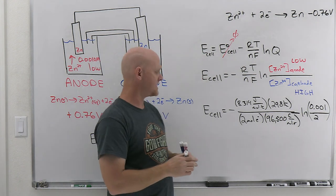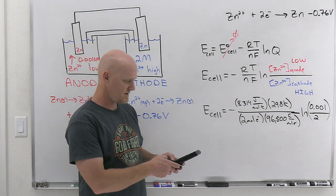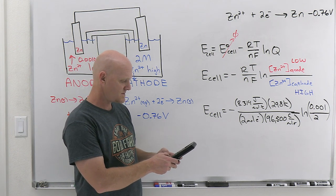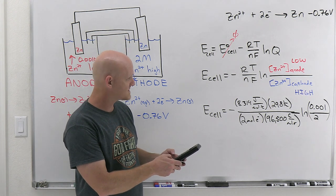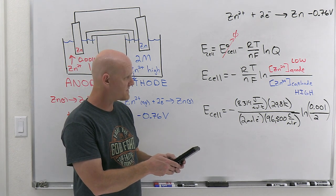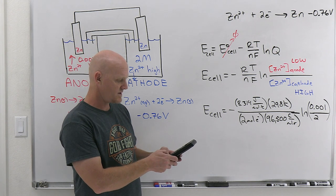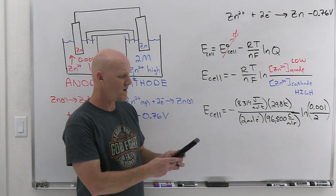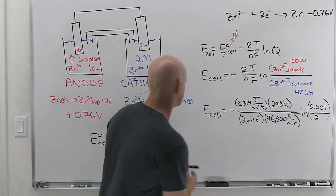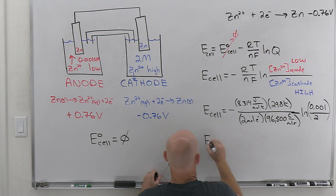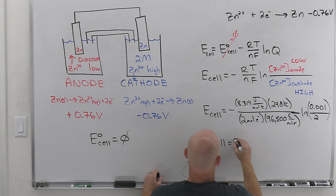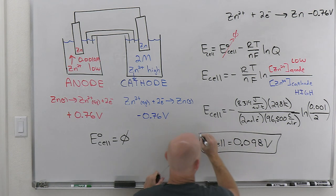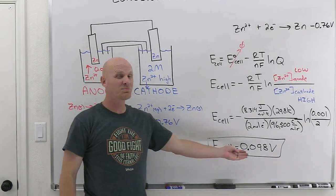And from here, it's going to be some plugging and chugging. Let's pull out that calculator. All right. So here we've got negative 8.314 times 298 divided by parentheses, two times 96,500. Close my parentheses. And then times the natural log. And once again, I'll use parentheses of 0.001 divided by two. Close my parentheses. And we're going to get 0.098 volts. Notice that is a positive number. It does correspond to a spontaneous reaction, but notice it's pretty small.